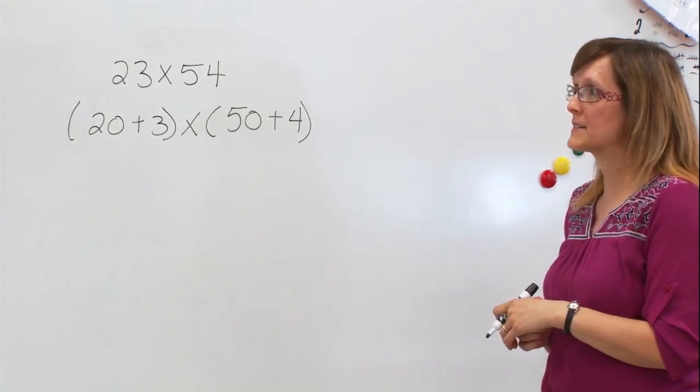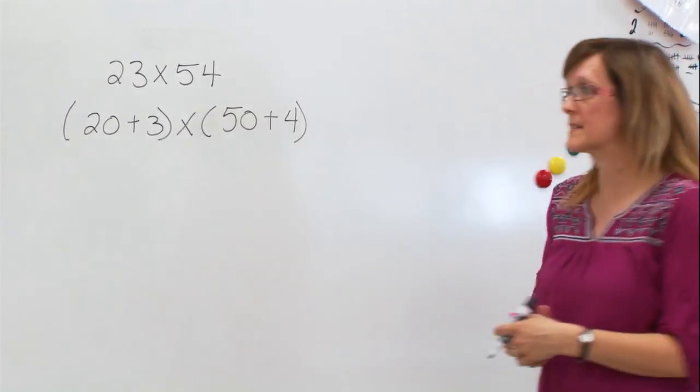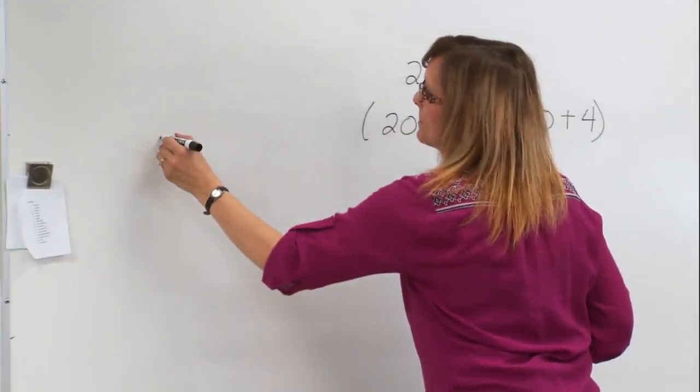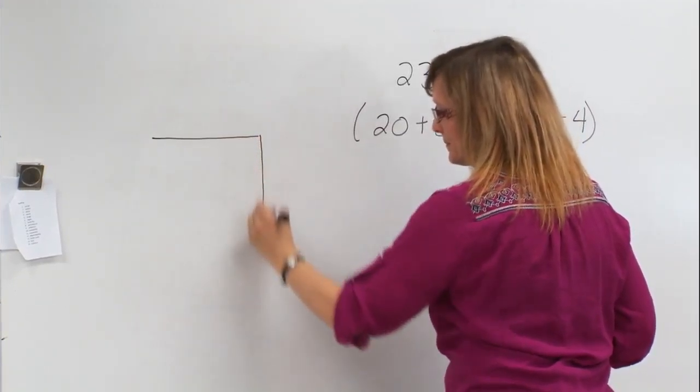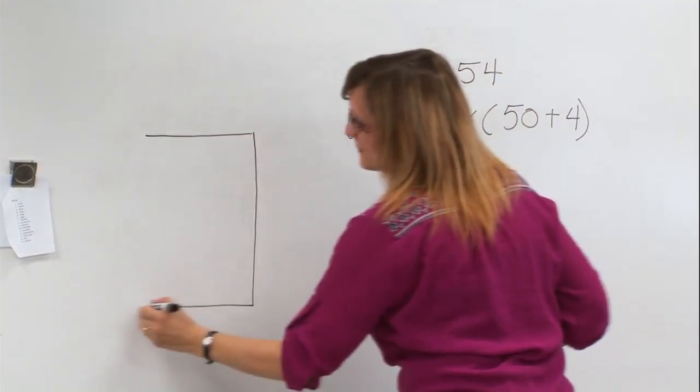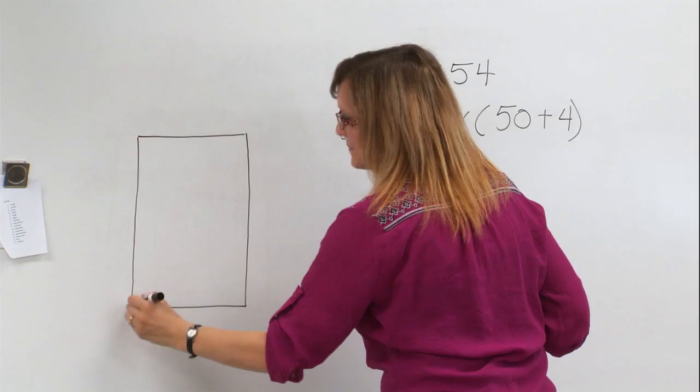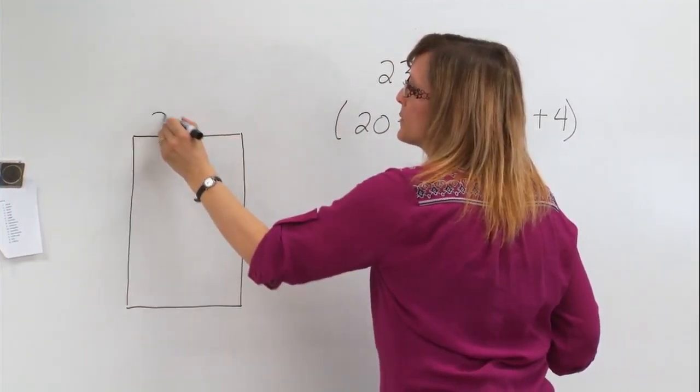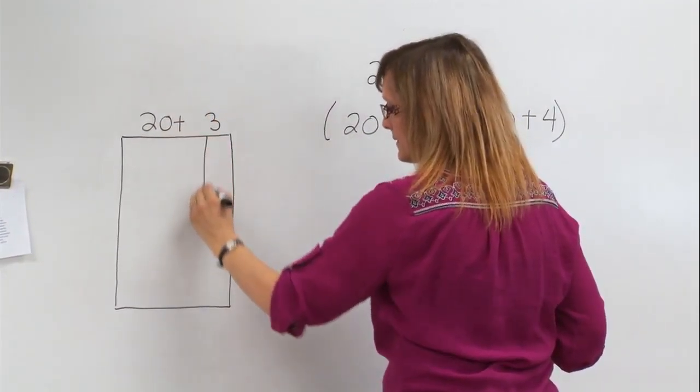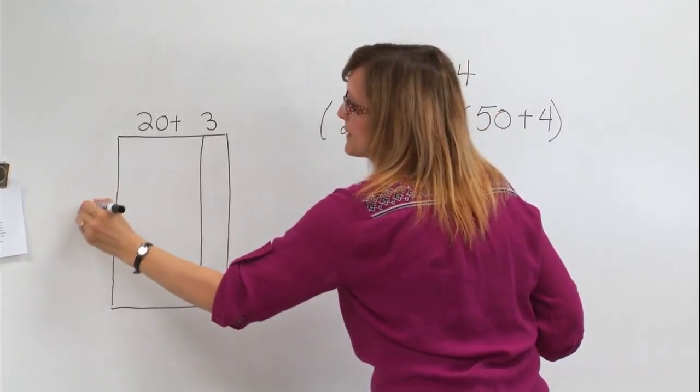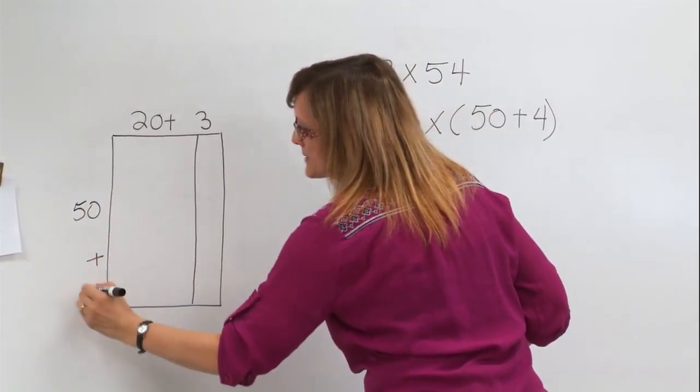20 plus 3 times 50 plus 4. Now if I were going to write that as an array or visualize it as an array, this is what it might look like. The teacher is making the connection between the question and the drawing of an array to help students see how the written work reflects the array. So we have 20 plus 3 times 50 plus 4.